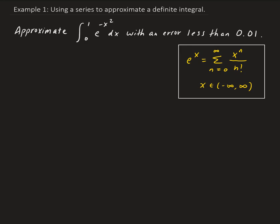In this example, we want to approximate the following definite integral with an error less than 0.01. To do this, notice that in our integral we have the function e to the minus x squared. We're going to use the power series for e to the x, rewrite e to the minus x squared in terms of a series, take the integral of that, evaluate it from 0 to 1, and then find how many terms we need for our summation.